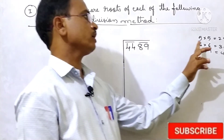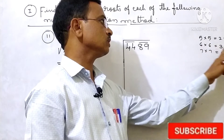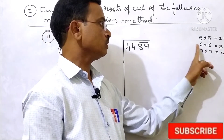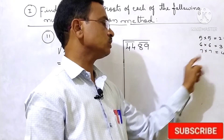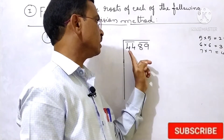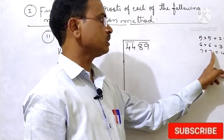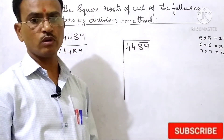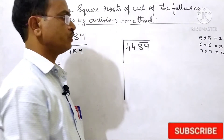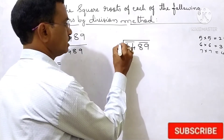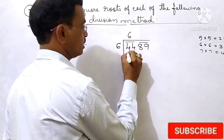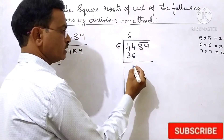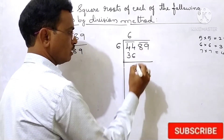You should take: 5×5=25, 6×6=36, 7×7=49. Now 36 is less than 44. If you take 7×7=49, that is greater than 44. So here you should take 6×6=36. Now subtract 44 minus 36, here 8.